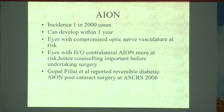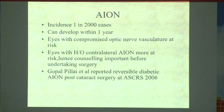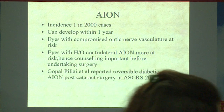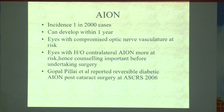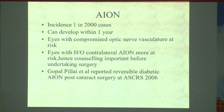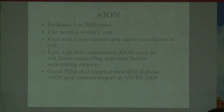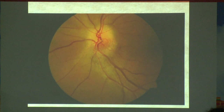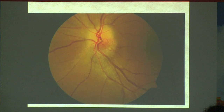Ischemic optic neuropathy: sometimes in phaco, people keep the bottle very high and in susceptible optic discs you can have an intraoperative AION. I published a series of 7 cases of intraoperative AION following phacoemulsification — the incidence is not so common. But if there is AION in one eye, the other eye is very highly likely. This is an anterior ischemic optic neuropathy — you can see one side has a pale disc edema and the other side has telangiectasia.